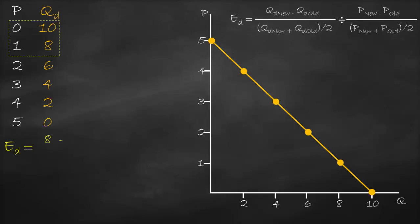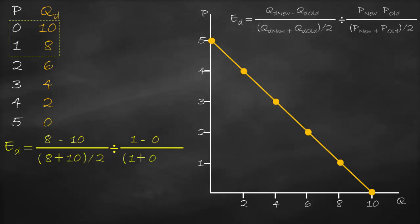Price elasticity of demand equals new quantity demanded of 8 minus 10, divided by the average (8 plus 10) divided by 2, divided by new price 1 minus 0, divided by the average (1 plus 0) divided by 2. This gives us negative 0.22 divided by 2, which equals negative 0.11.